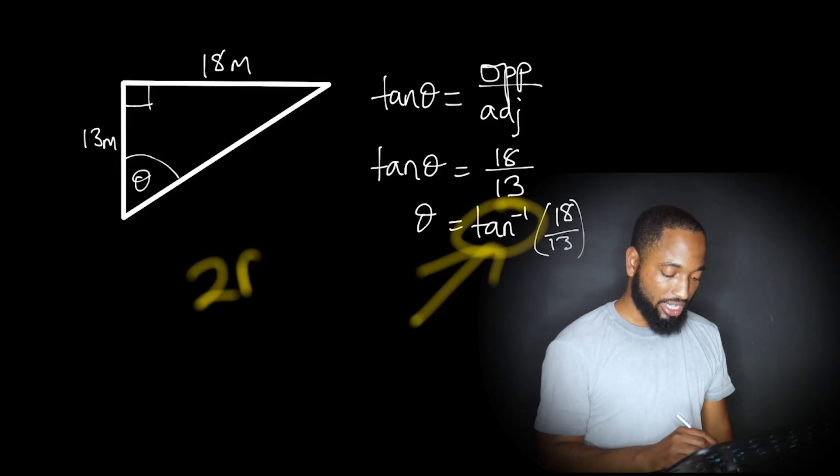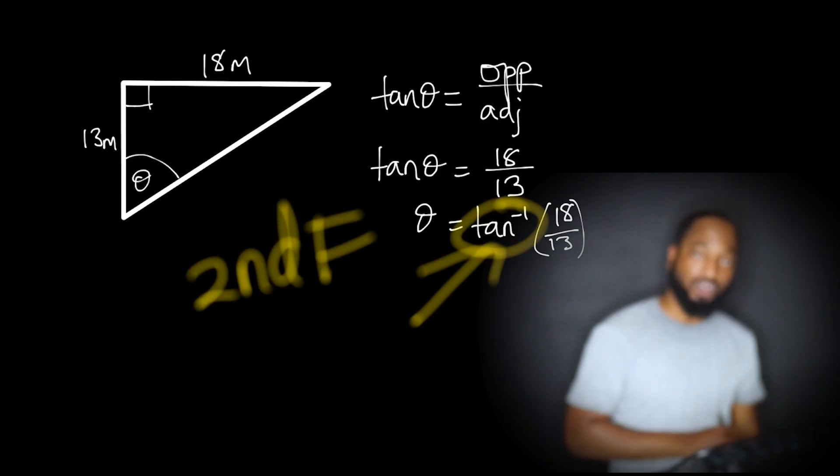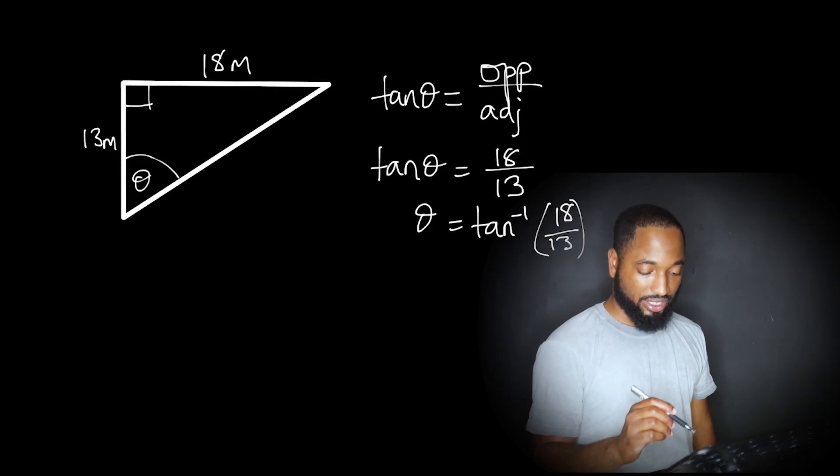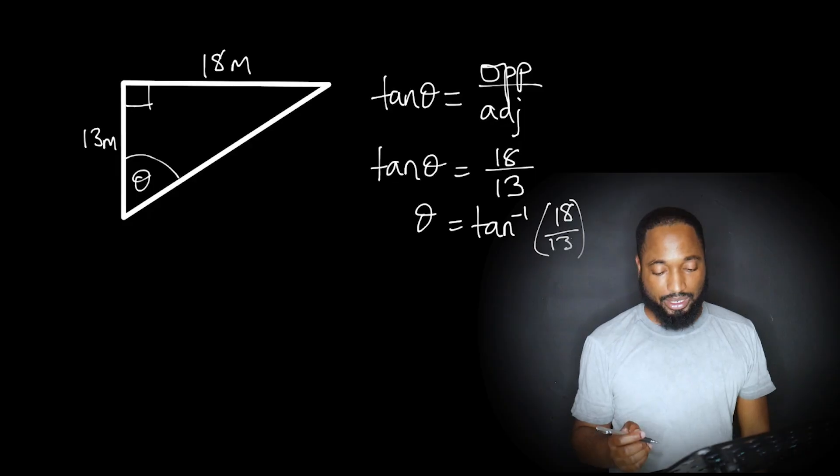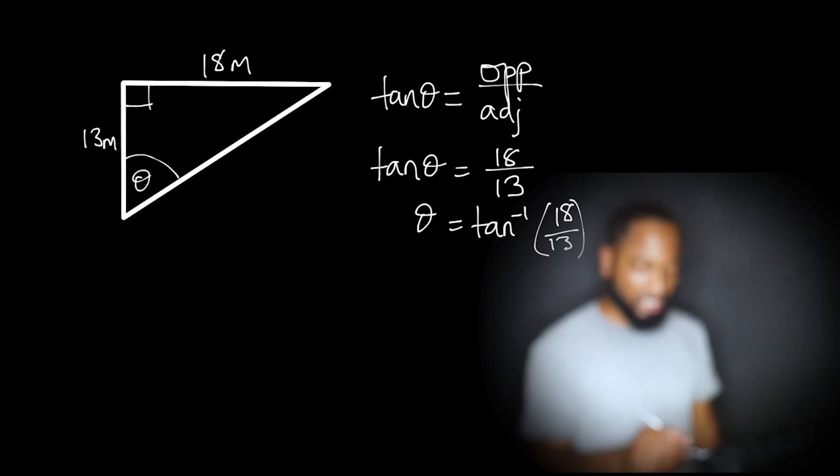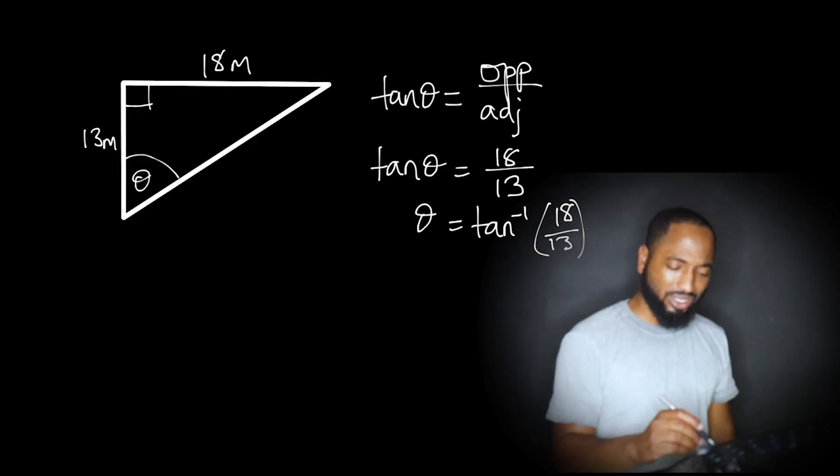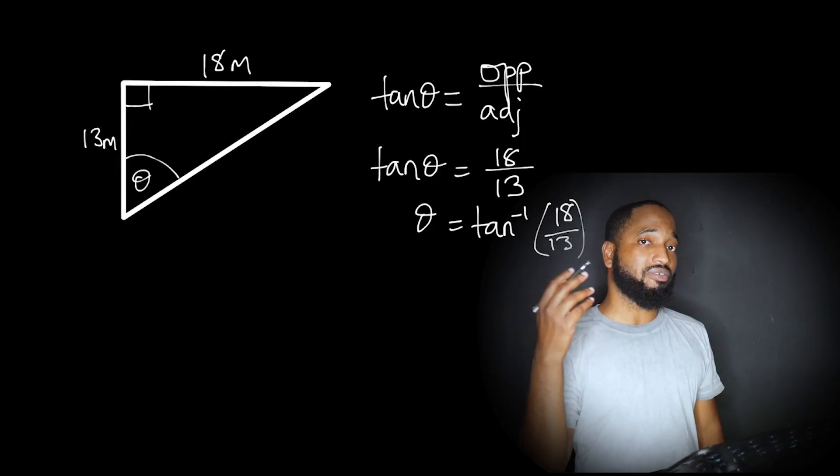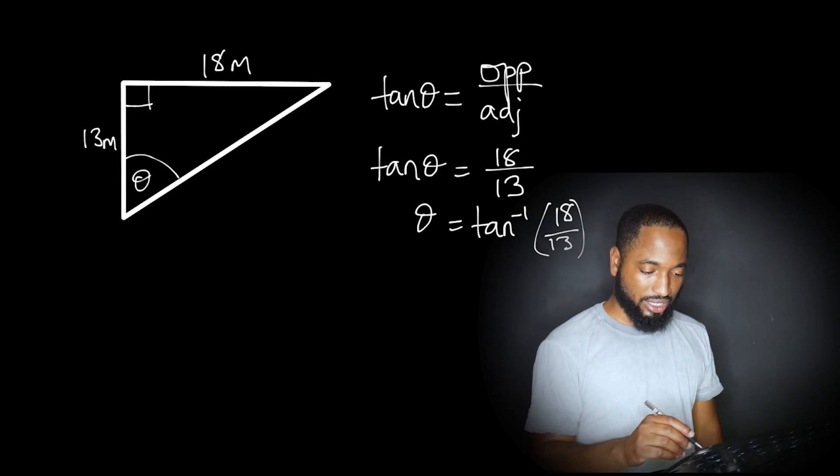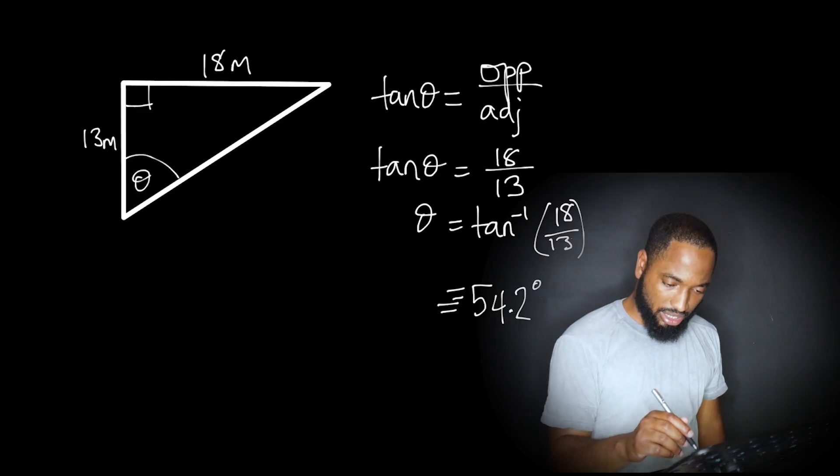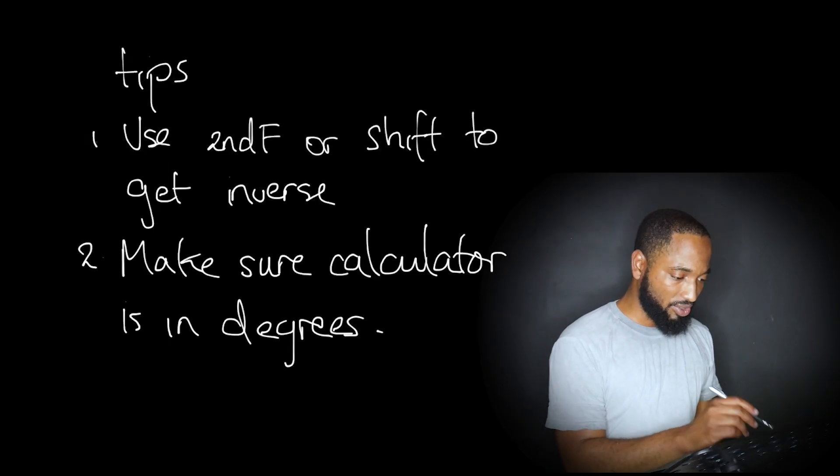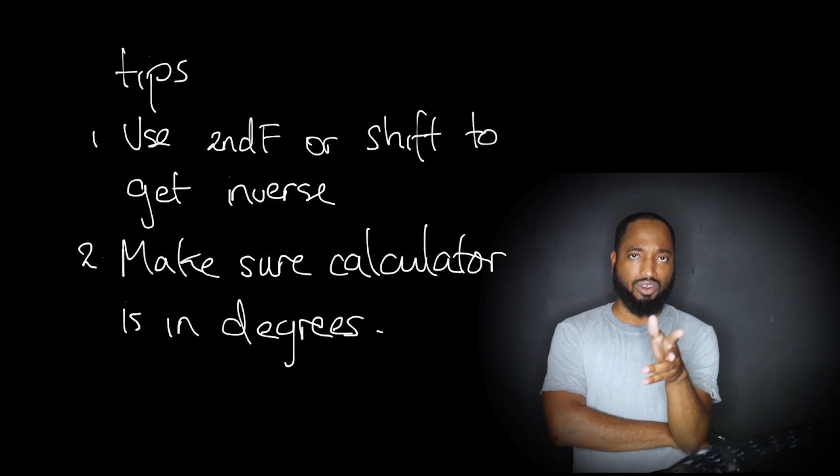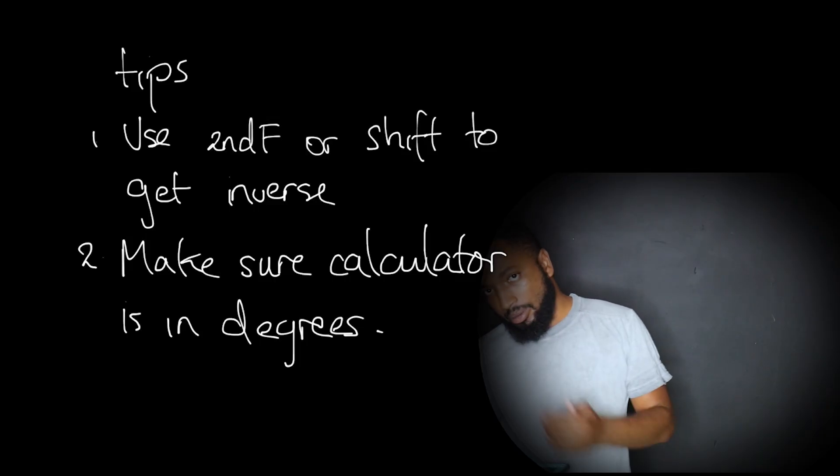Theta equals tan inverse. This is new. What's this? You get this by pressing second function on your calculator, or shift on your calculator, and press tan. And you'll bring up that, that's the inverse of tan. Tan inverse, or arctan you might see on some calculators. Tan inverse of 18 over 13. Make sure you put your brackets and everything. By the way, I have a nice tutorial on calculator, all the tips and tricks you could use for your calculator in your exam. Solve simultaneous equations, solve quadratic equations, and how to do stuff like this. So you can check out that series. I'll link it here. And the idea of that, and I think the idea of this video here, remember the tips: use second function or shift to get inverse.